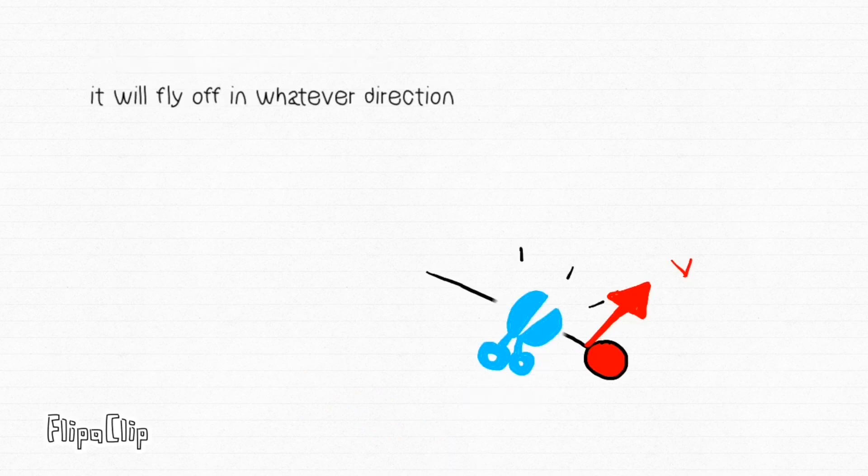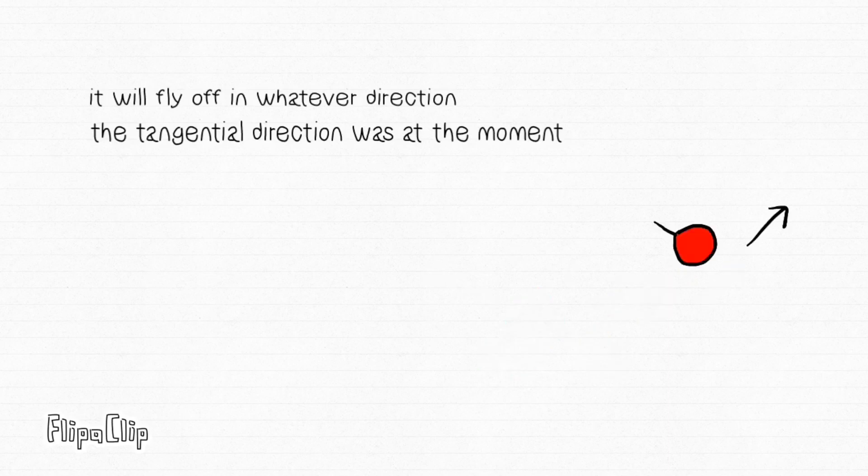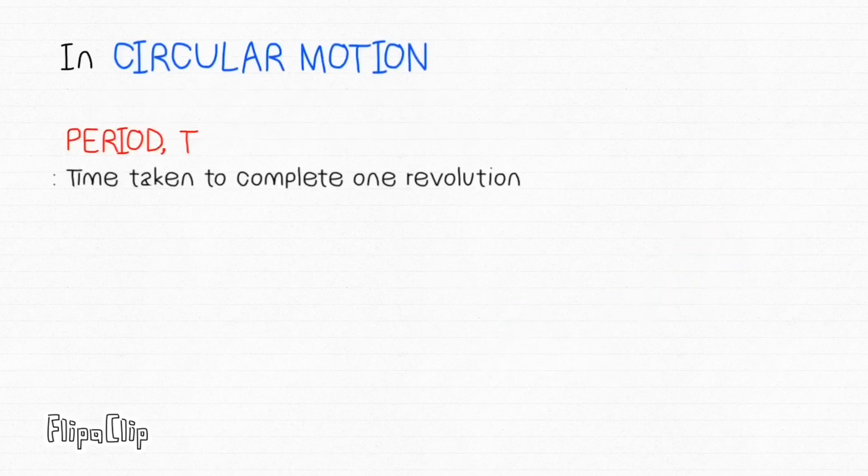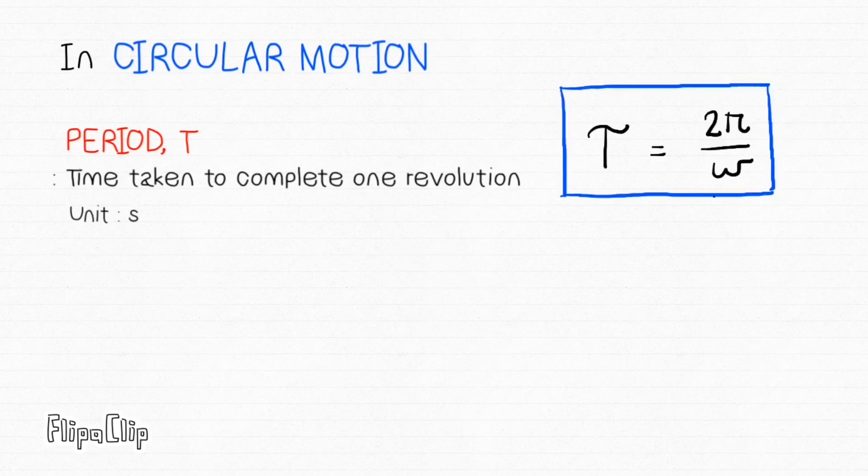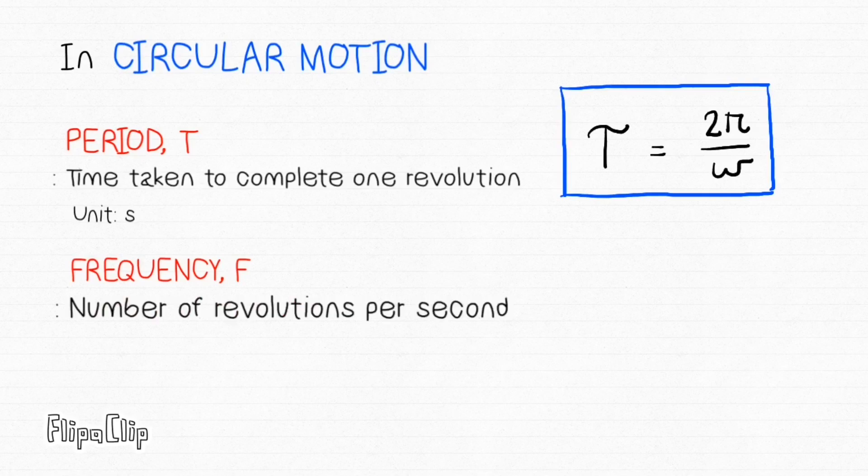The next term is period. Period is the time taken to complete one revolution. The formula is T = 2π/ω. Meanwhile, frequency is the number of revolutions per second. The formula is F = 1/T.